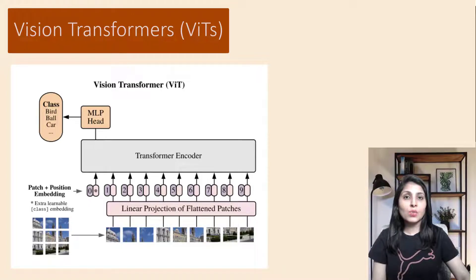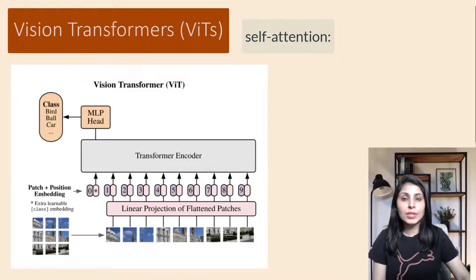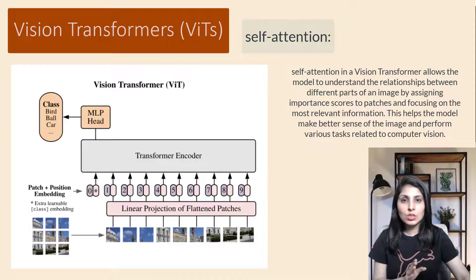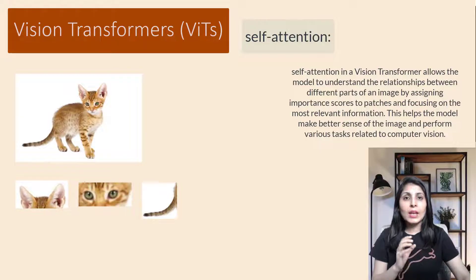Vision transformers use something called self-attention. I've already explained the concept of self-attention in my previous video on transformers — the link is in the description. In today's video I'll just give you a brief idea of what self-attention is in the context of vision transformers. Self-attention is a way for computers to understand the relationship between different parts of an image. Imagine you're looking at a picture of a cat — with self-attention the computer can focus on different parts like its ears, eyes, and tail.